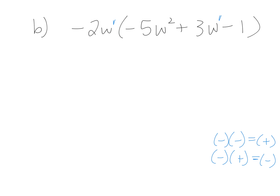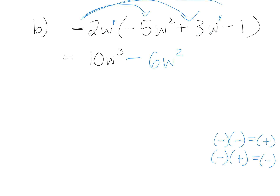We have negative 2w times negative 5w squared. Negative times negative is positive, 2 times 5 is 10, and w to the power of 1 times w to the power of 2 is w to the power of 3. Then negative times positive is negative, 2 times 3 is 6, and w to the power of 1 times w to the power of 1 is w squared. Negative times negative is positive, 2w times 1 — raise your hand if you got this.